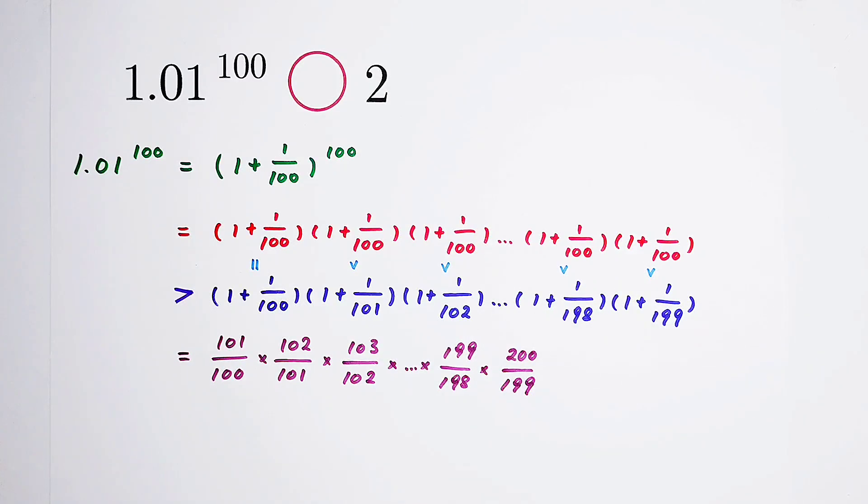Then you can see many things can be canceled. 101, 101. They can cancel each other. 102, 102 as well. 103, 103. Here 199 with this 199. So what will be left? So the rest thing is 200 over 100. And 200 over 100. Don't calculate it wrong. It is, of course, 2. It is 2.